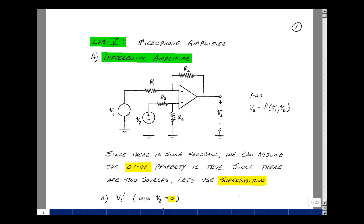This lesson deals with Lab 5, a microphone amplifier. Signals coming out of a dynamic microphone are quite small, on the order of hundreds of microvolts. We're going to need an amplifier to amplify them.